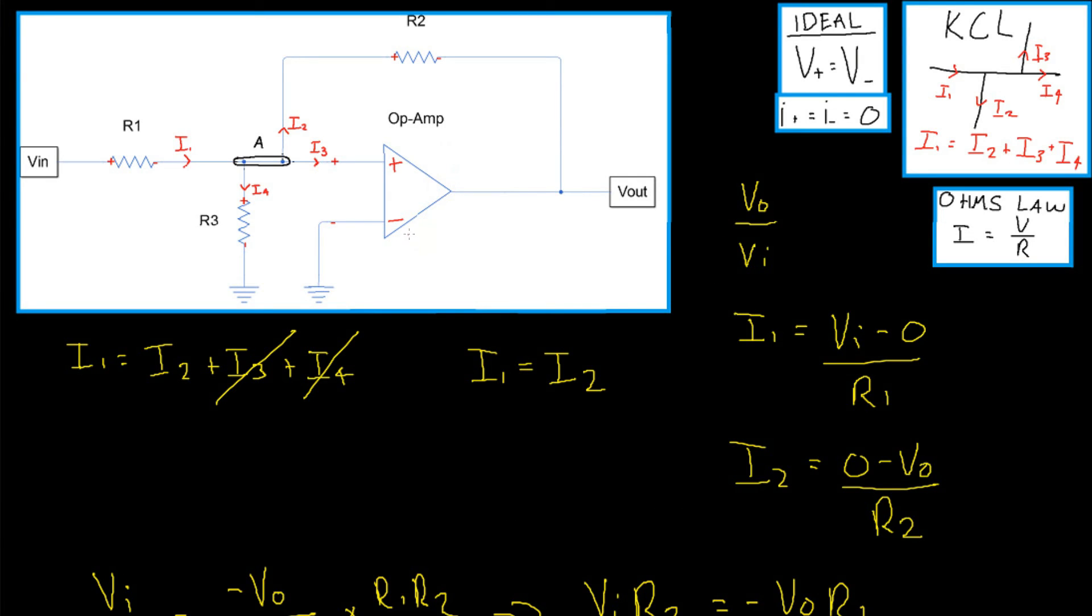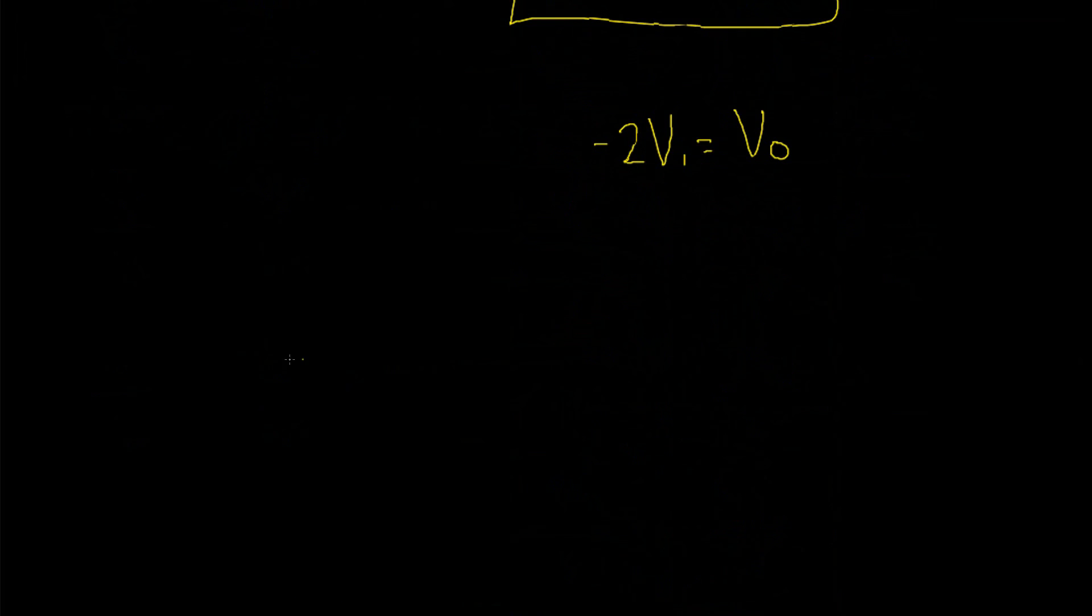So you might be thinking, how are we amplifying a signal with only resistors and an op amp considering the op amp doesn't appear to take in any extra voltage? Well, that's not entirely the case. The op amp also has an external power VCC and a ground which it uses to amplify the signal. Thanks for watching guys.